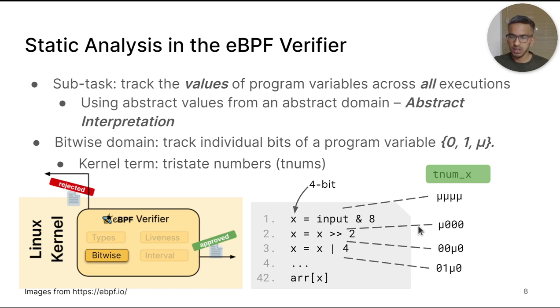Importantly, the information encoded in TNUM x can be used to infer that the value of x will always be either 4 or 6 in all executions. This can later be used to determine the safety of the memory access at line 42.